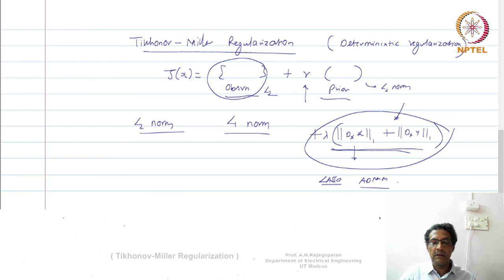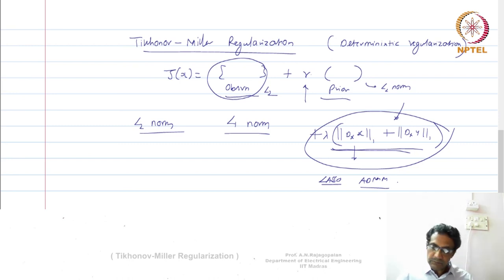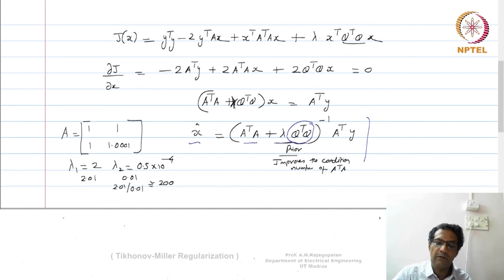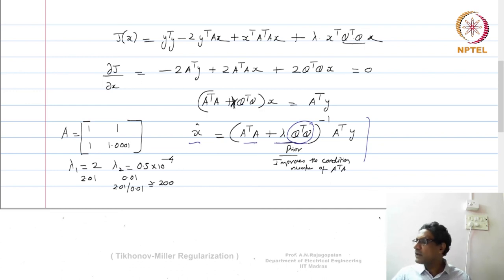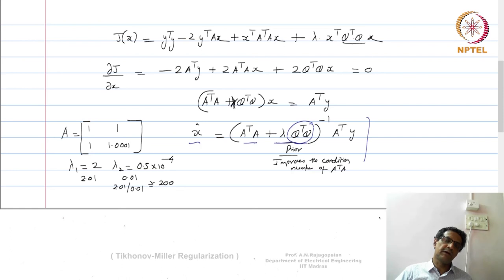Once you frame the cost function, there are optimization methods available to solve these problems. LASSO is one such thing, which uses what is called ADMM. The key point is that prior information enters in a certain form in order to improve the stability of your final solution — that is the goal of this kind of regularization theory. As a follow-up, we will see what stochastic regularization is and its relation to deterministic regularization.